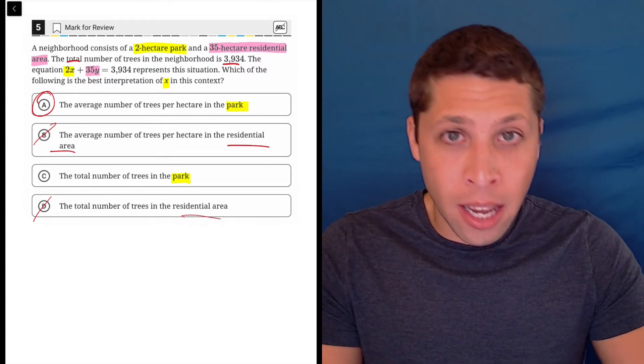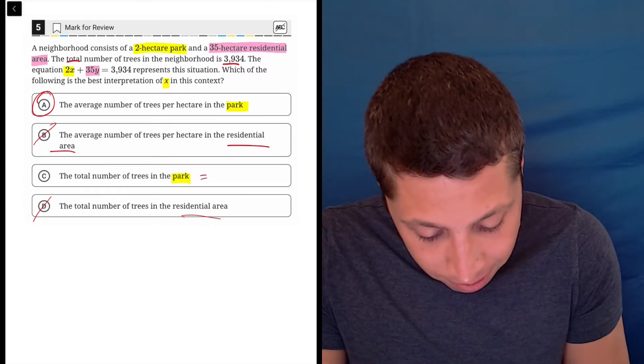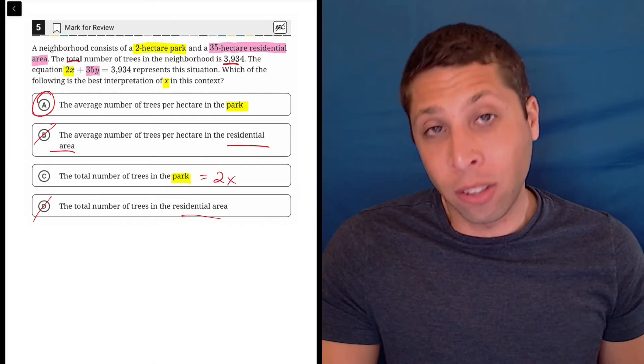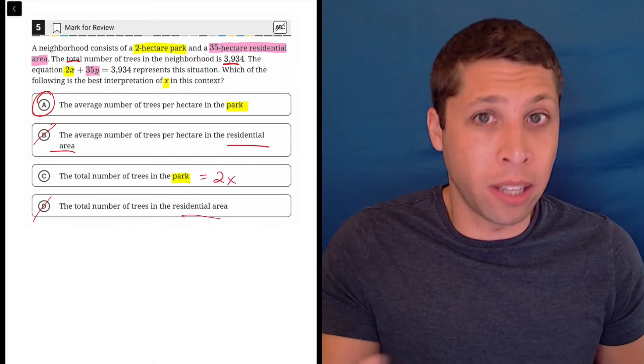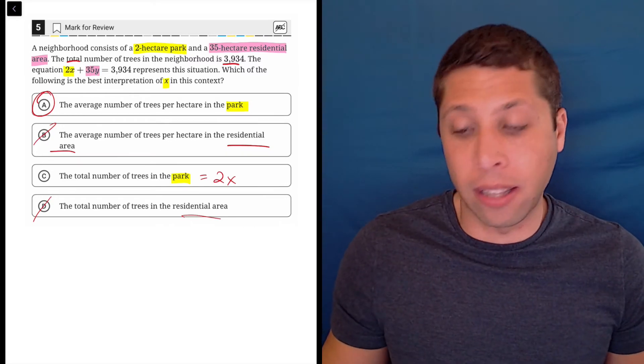So choice C is actually not x. It's the quantity 2x. And so it's kind of part of the story in the equation, but it's not the specifics that they asked for.